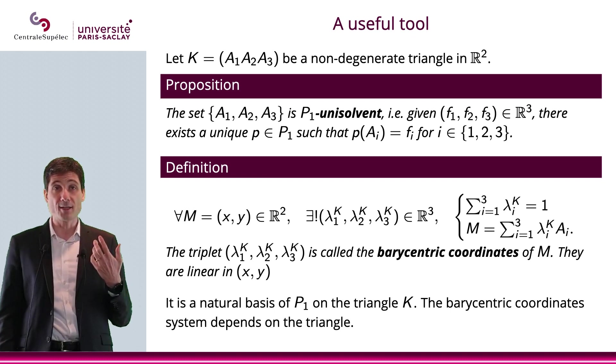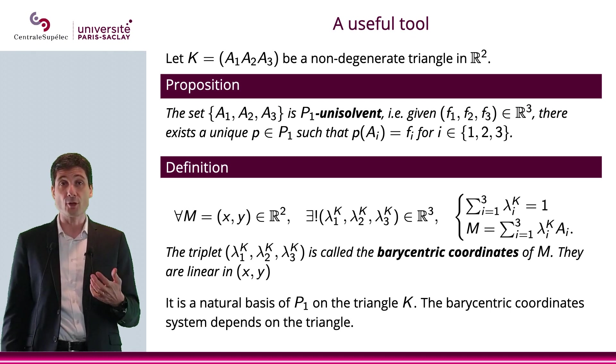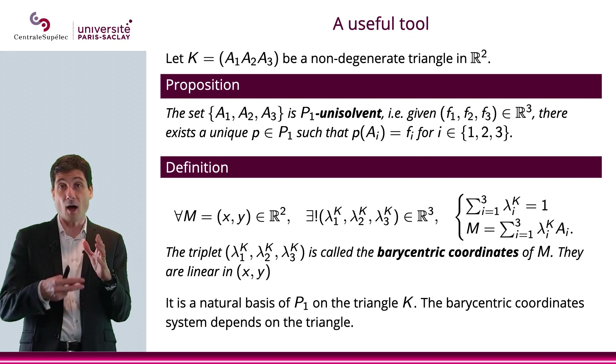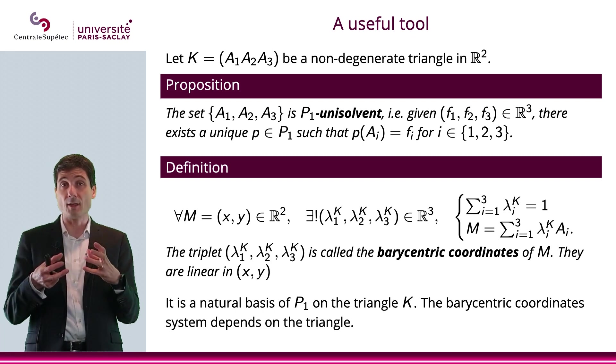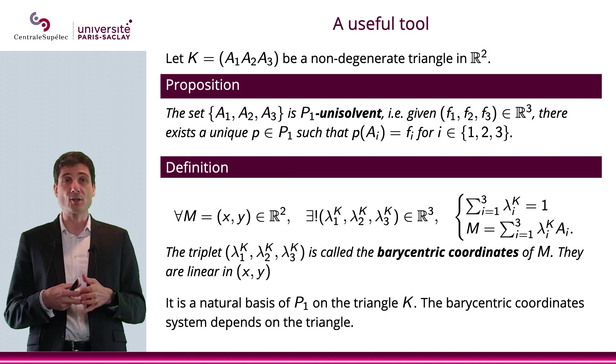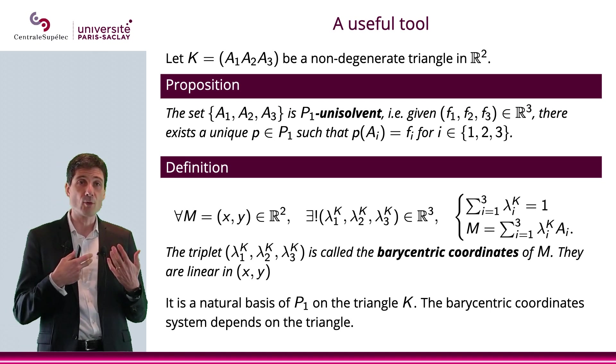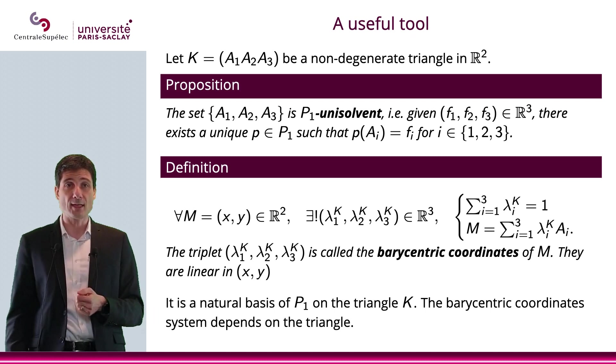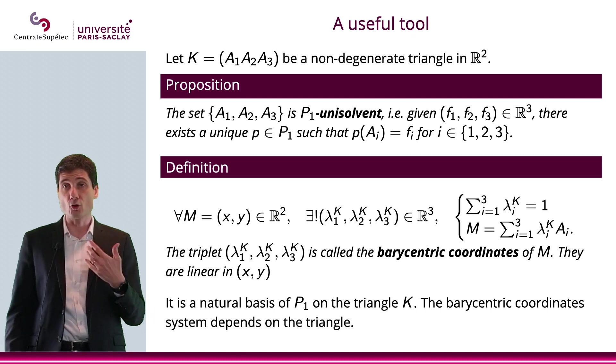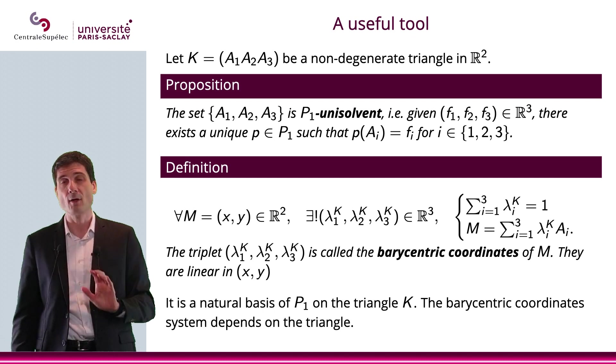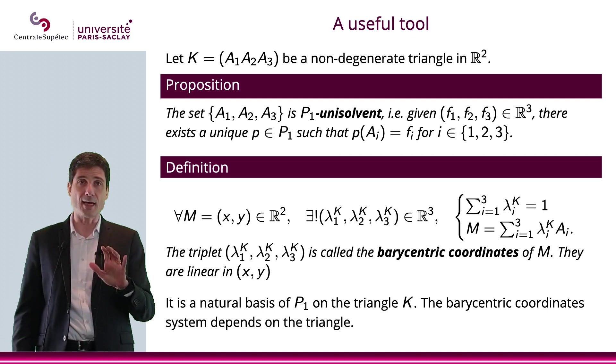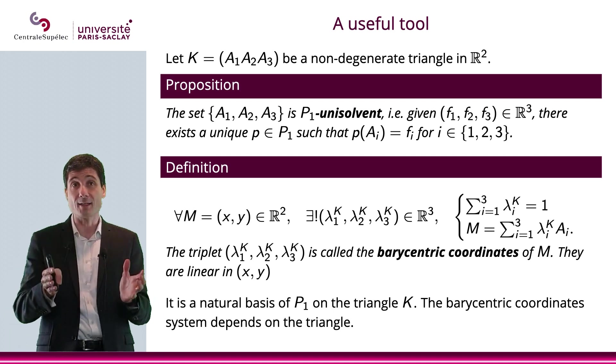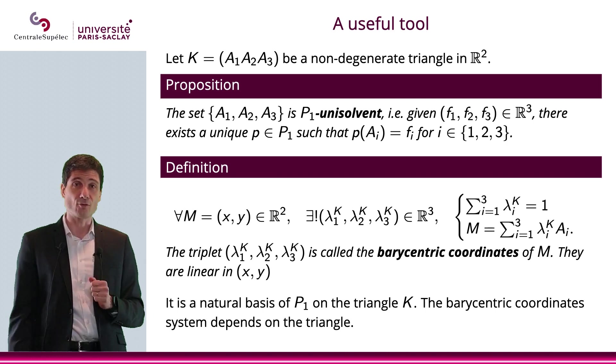And what we are saying is that it can be useful to consider the barycentric coordinates of the points because when you have your triangle, it will be a useful way to put things together. So it will be a natural basis of P1 on the triangle K and the barycentric coordinates system depends on the triangle. So it's a very useful way to put things together. But, again, what happens here is that you could basically do everything without it, but we're just saying that this is a useful tool.